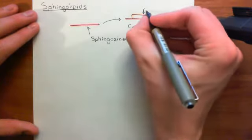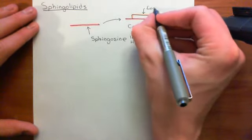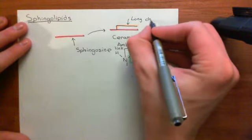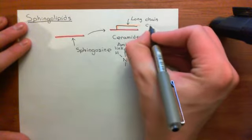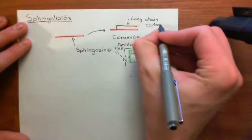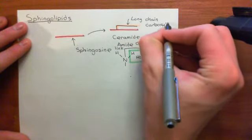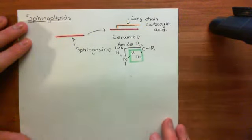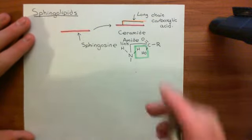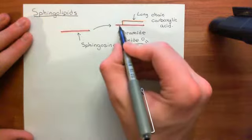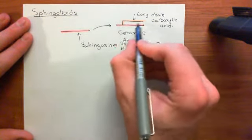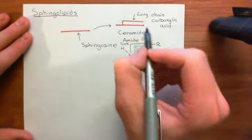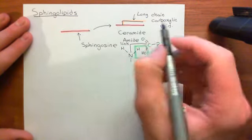To create a ceramide, you add a long-chain carboxylic acid onto your sphingosine molecule via an amide link. Clearly there is not just one ceramide molecule, because there is not just one long-chain carboxylic acid — there are many different ceramide molecules that you can create by adding different long-chain carboxylic acids on. We're not yet at a sphingolipid.